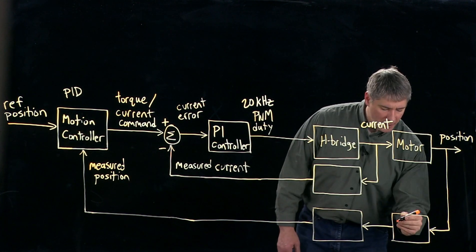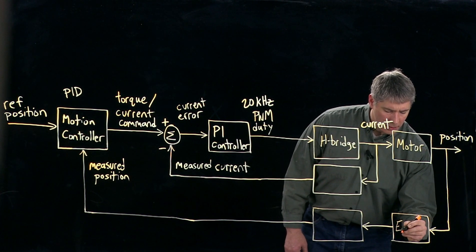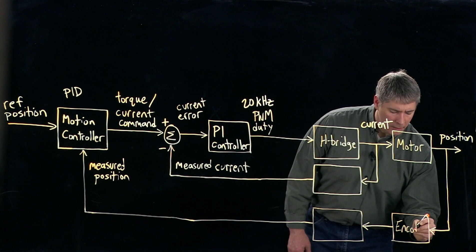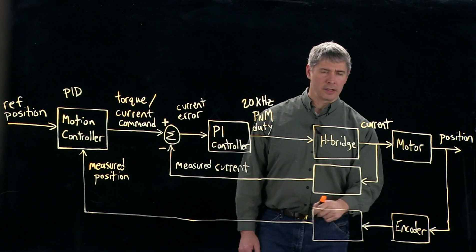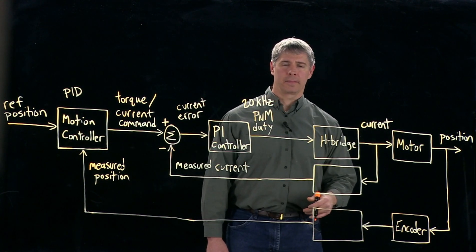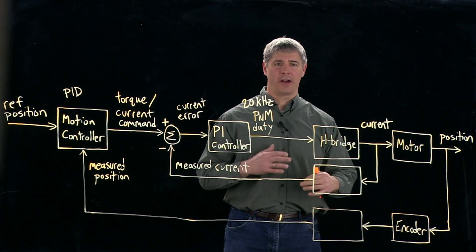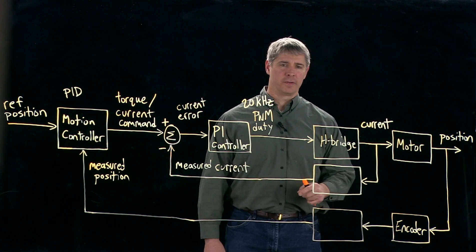That position is then measured by an encoder. And the encoder puts out pulses that are out of phase with each other that tell us how the motor is moving.